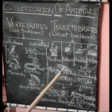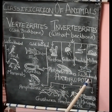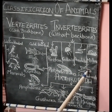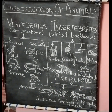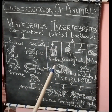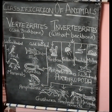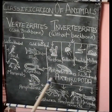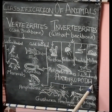Planaria and Echinodermata include starfish. So these are the different phyla with different examples. Invertebrates also include Arthropoda.